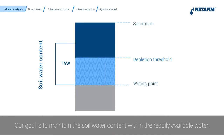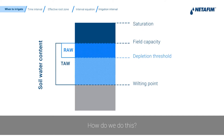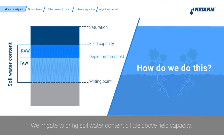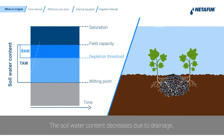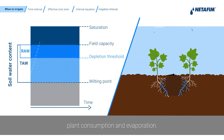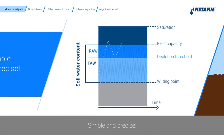Our goal is to maintain the soil water content within the readily available water. How do we do this? We irrigate to bring soil water content a little above field capacity. The soil water content decreases due to drainage, plant consumption, and evaporation. When it reaches the depletion threshold, we irrigate again. Simple and precise.